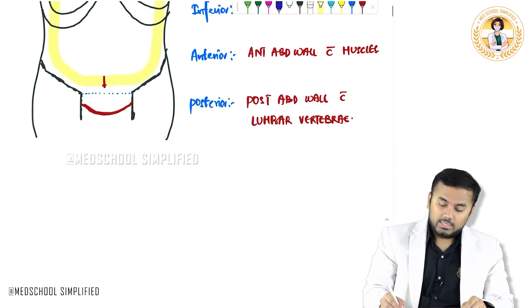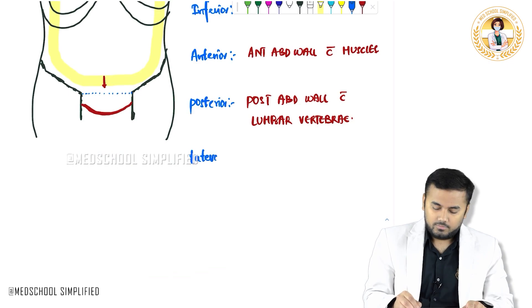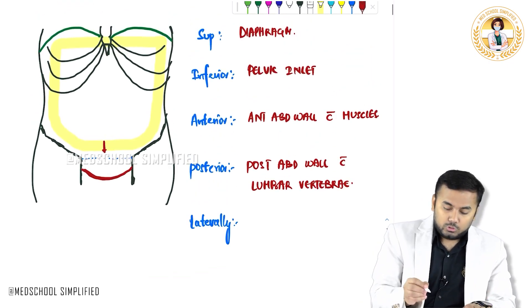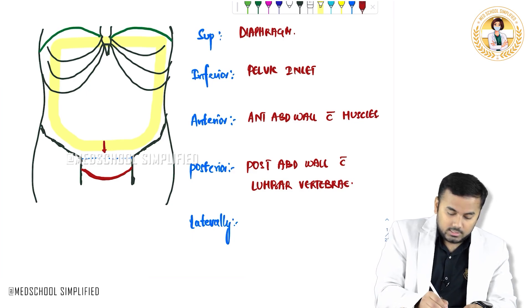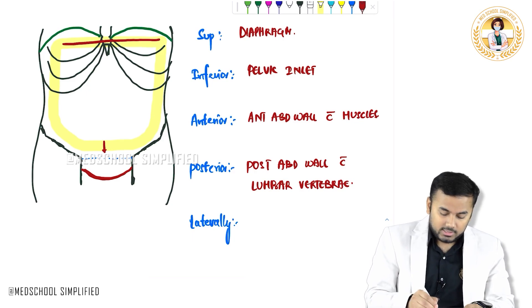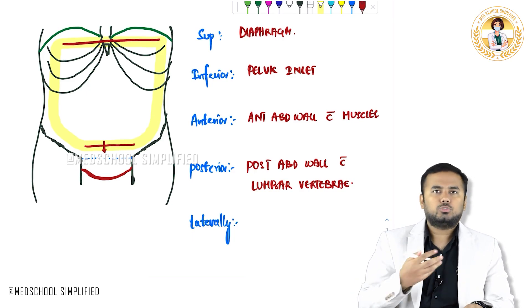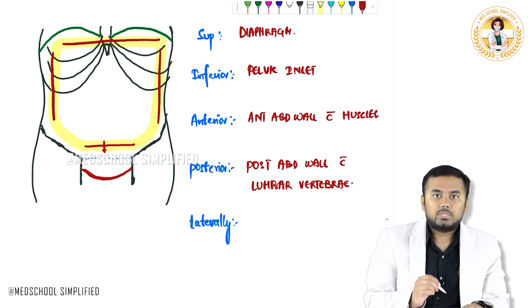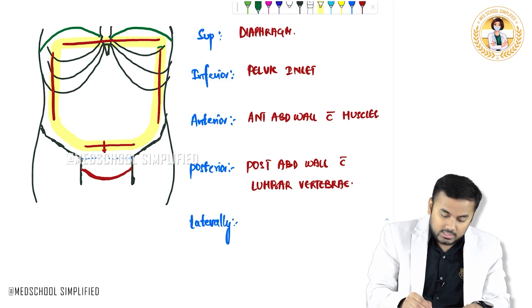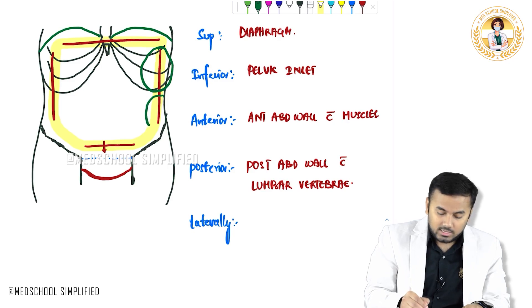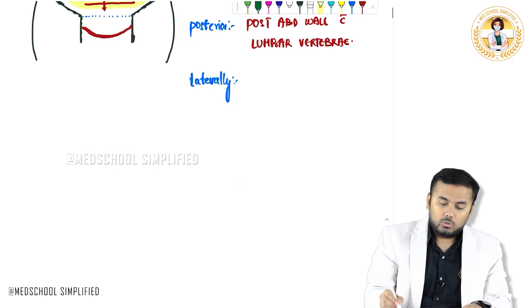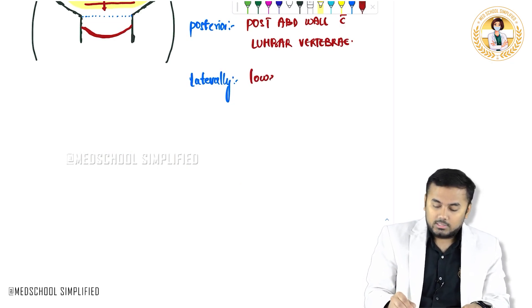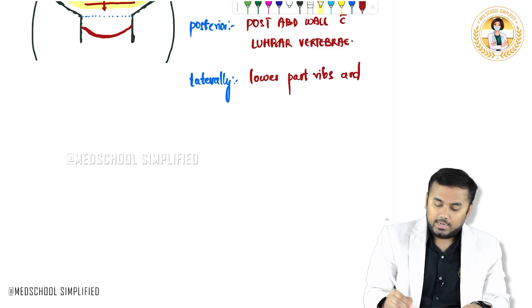And the final important thing is laterally. If you see laterally — superiorly is this line forming the superior border, this line is the inferior border, anterior and posterior you cannot see. Laterally, I can tell that it is the lower part of the ribs as well as the abdominal wall. So laterally, I have got two important things: one is the lower part of the ribs, as well as the anterior abdominal wall.